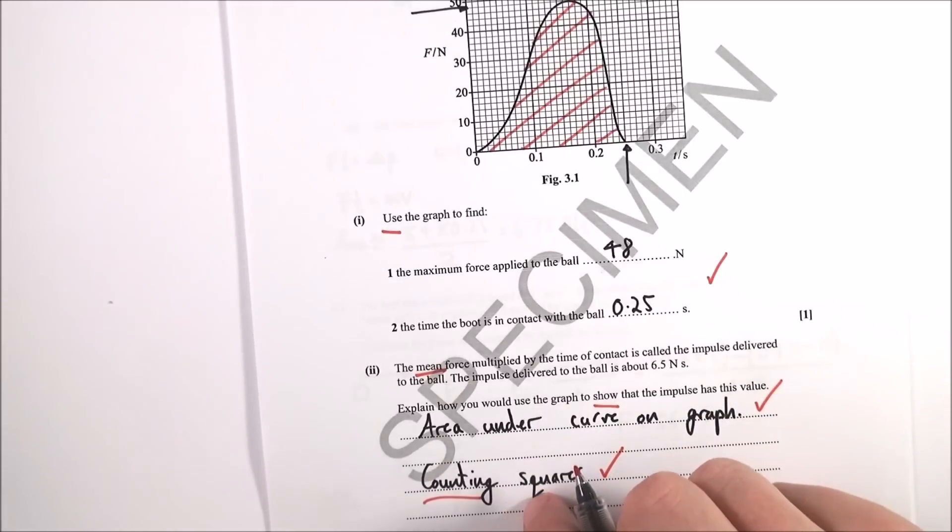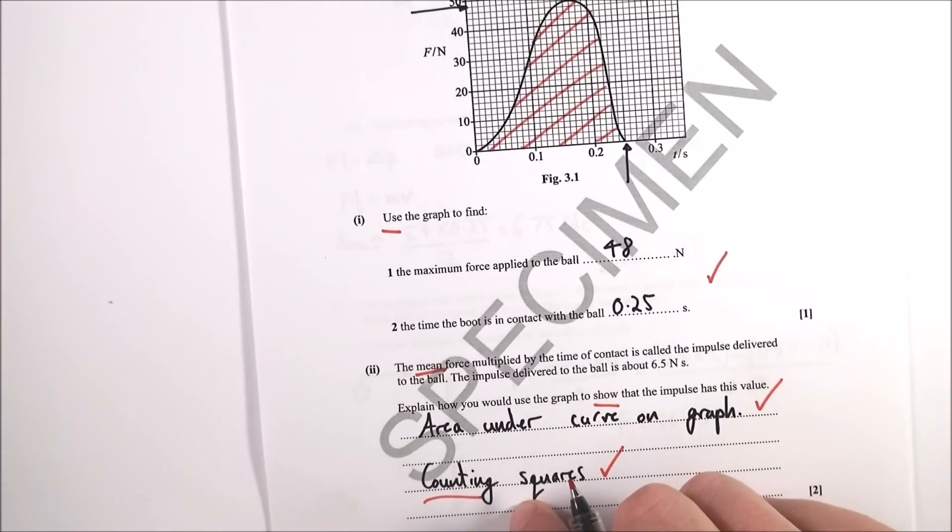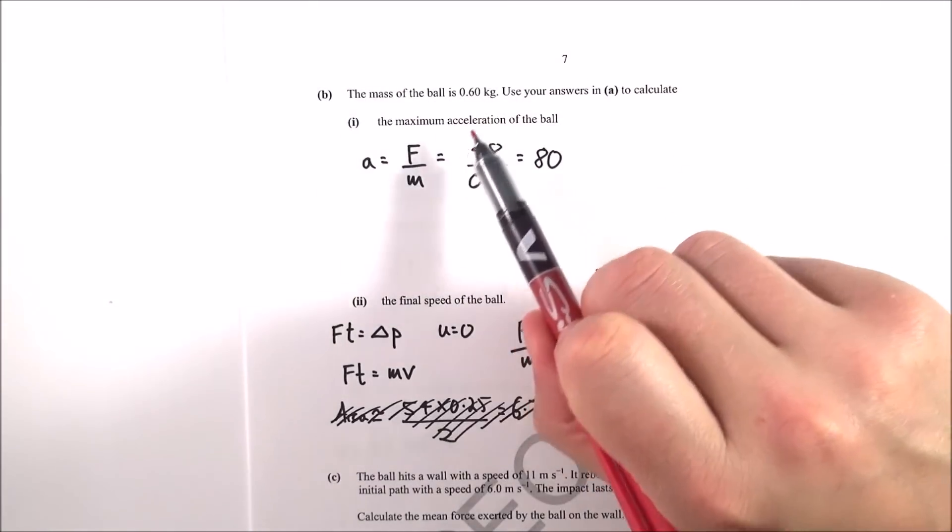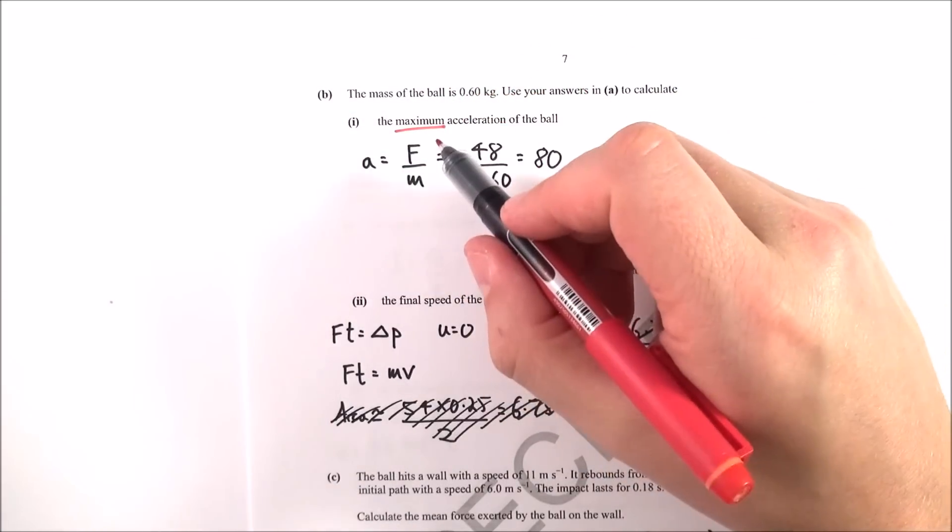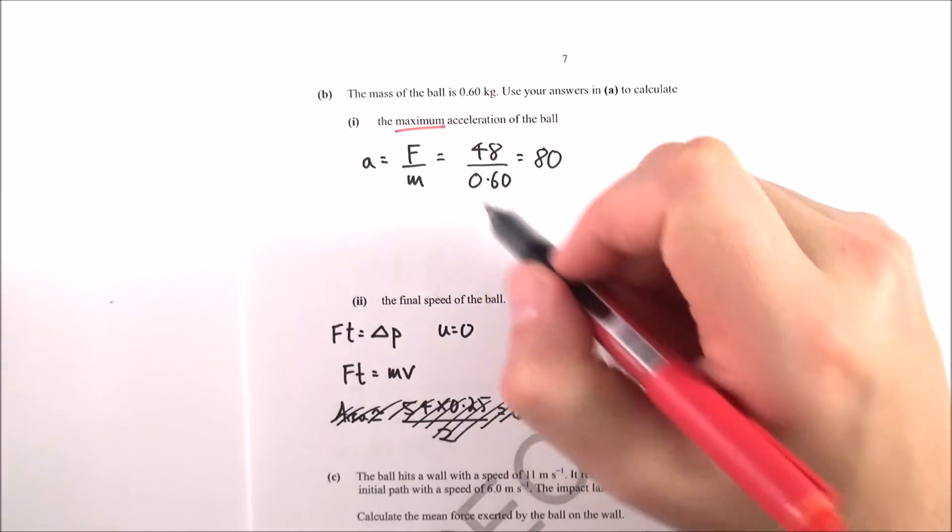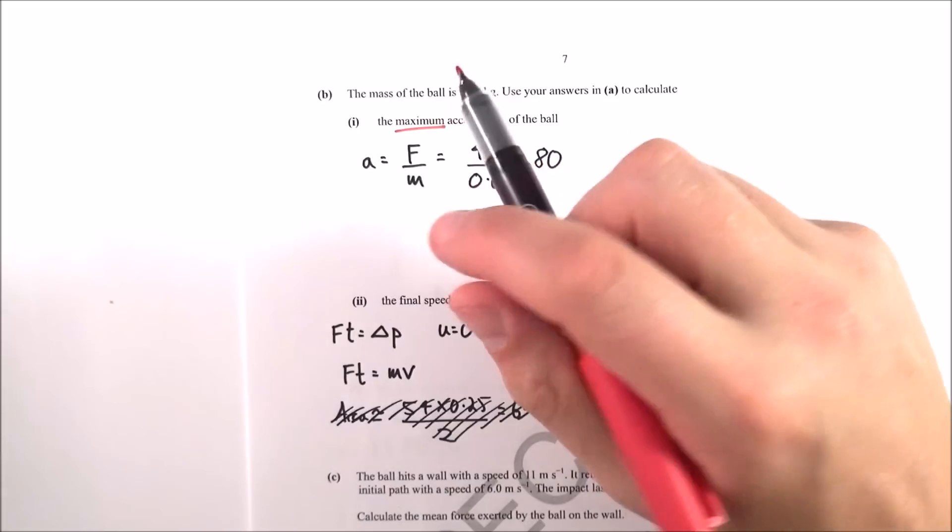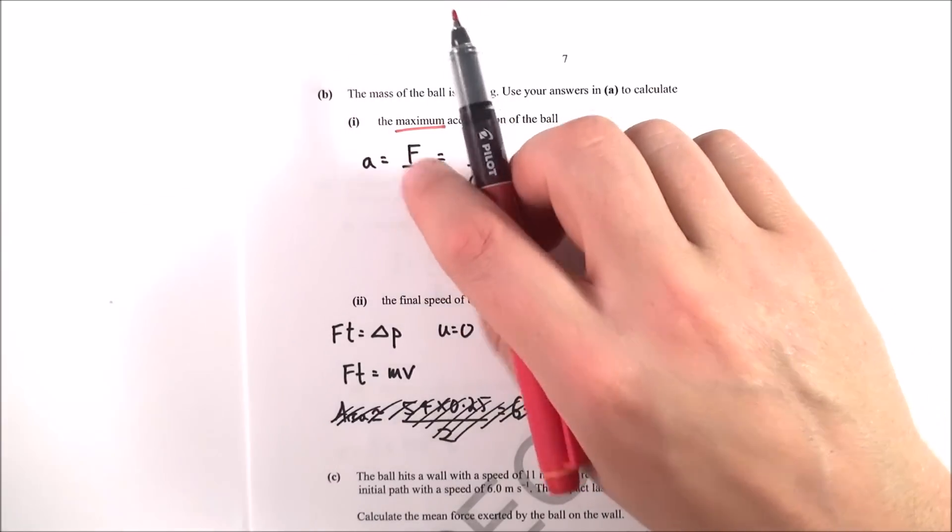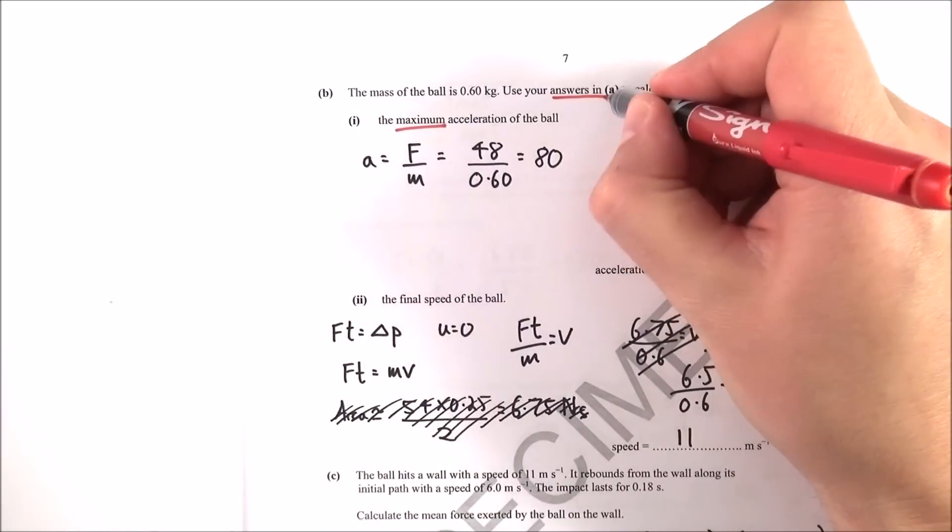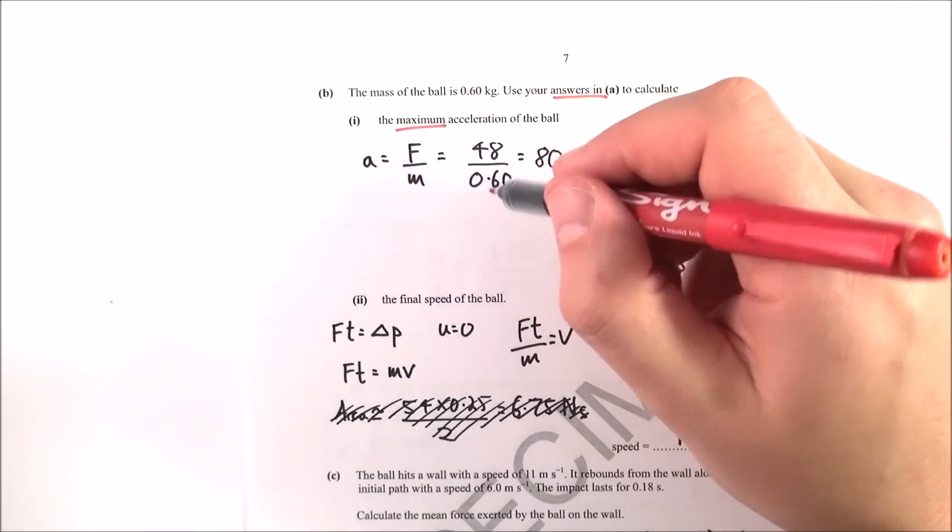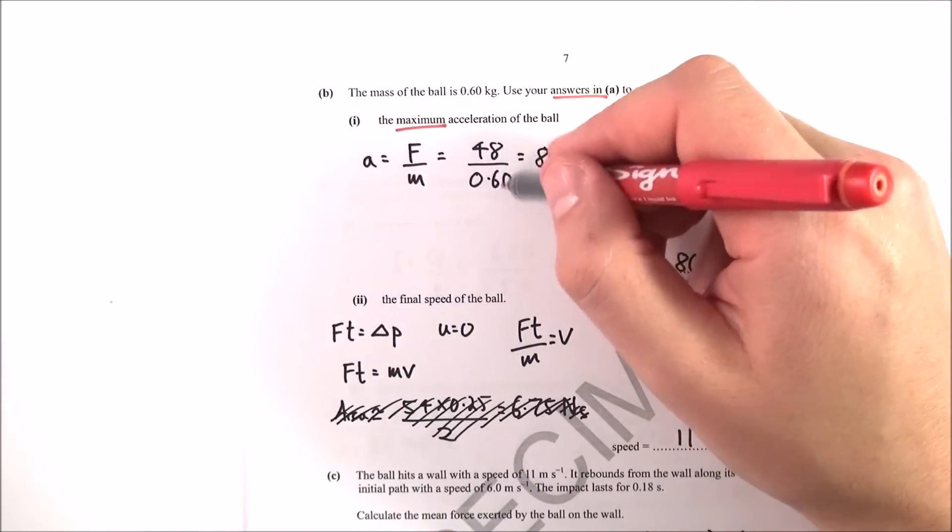Part B wants the maximum acceleration. You get maximum acceleration when you have maximum force. Newton's second law, the simplified version, is F = ma, so acceleration equals force over mass. The force from the first part is 48, the mass is 0.6, so dividing these gives 80 meters per second squared.